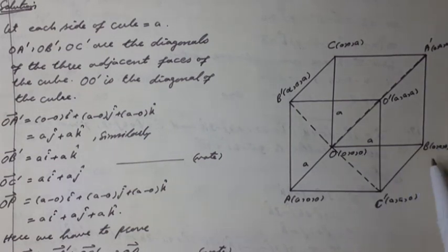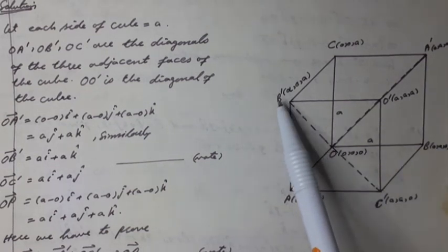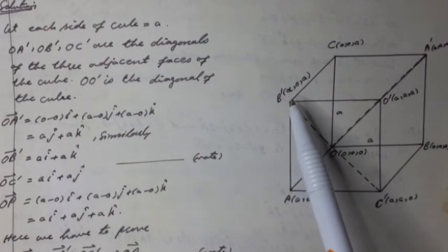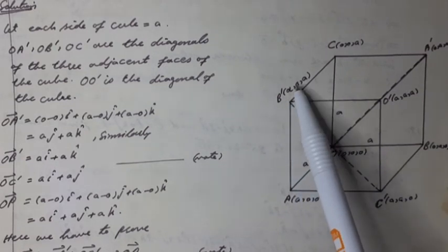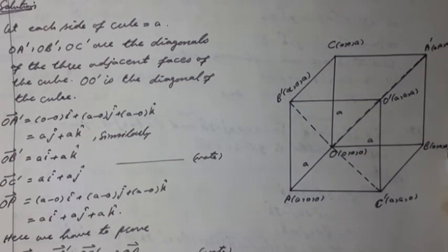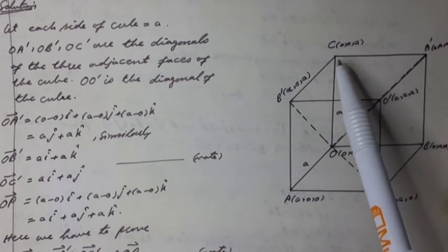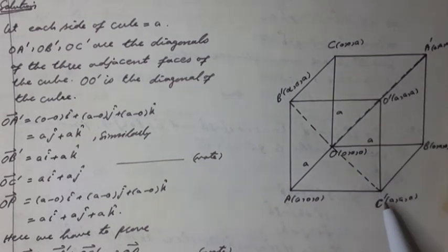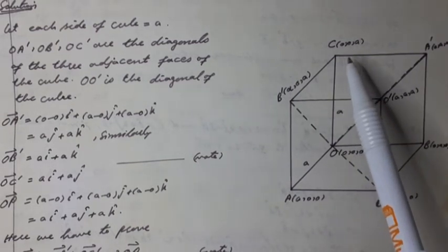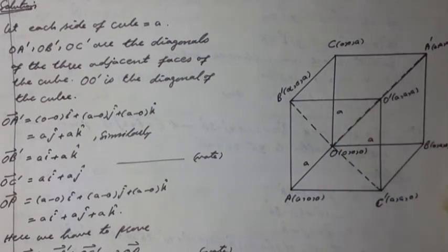B has coordinates (0, A, 0) and B' has coordinates (A, 0, A). C has coordinates (0, 0, A) and C' has coordinates (A, A, 0).